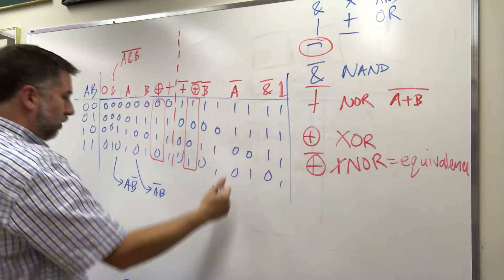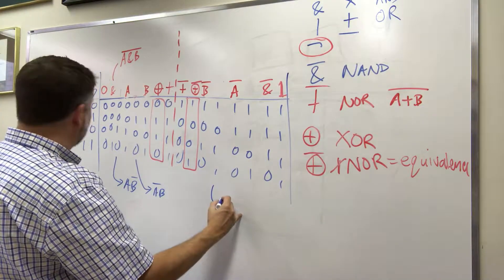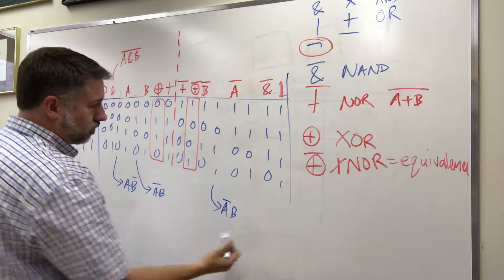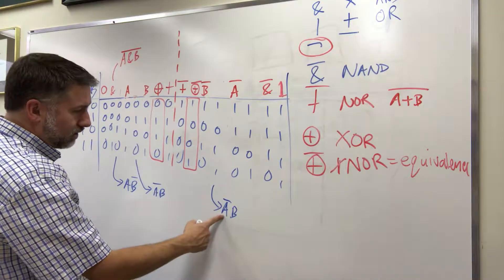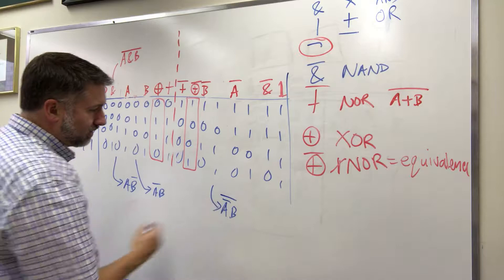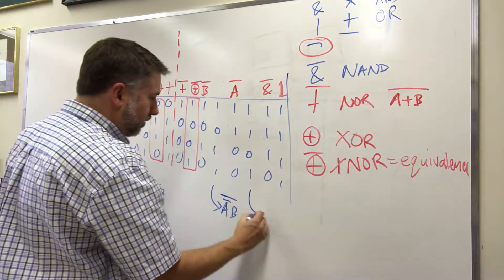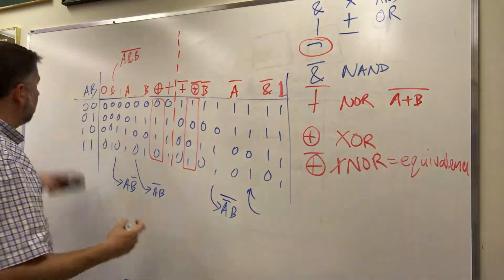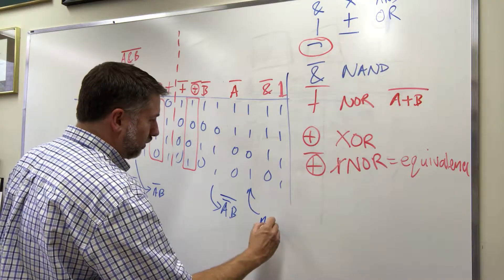Only when a is false and b is true. So we say a is true, a is false, b is true, and the whole thing is inverted. And the same thing here. This one is false only if a is true and b is false.